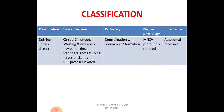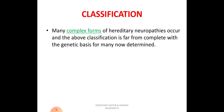Type 3 is Dejerine-Sottas disease. It starts in childhood and there is wasting and weakness in proximal muscles as well. Peripheral roots and spinal nerves are thickened, similar to Type 1, and CSF protein will be elevated. The pathology is also similar to Type 1 — demyelination with onion bulb formation. Motor nerve conduction velocity is profoundly reduced on electrodiagnosis. Genetically, this is an autosomal recessive disorder.